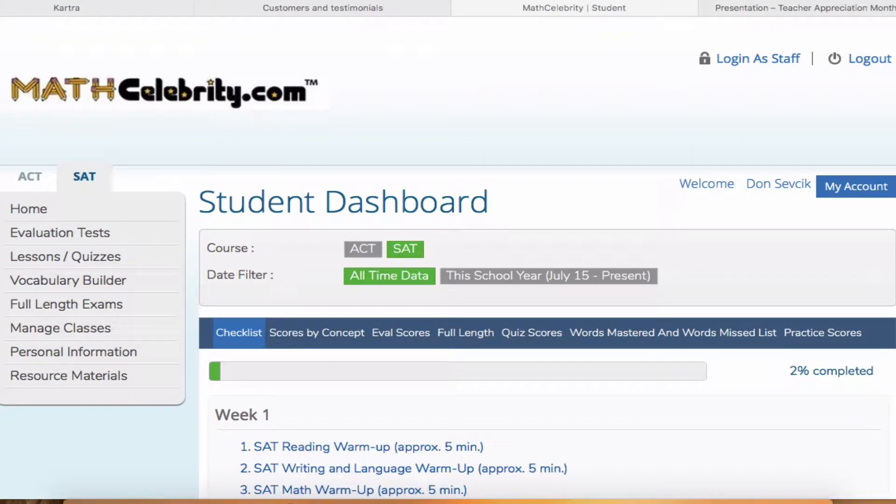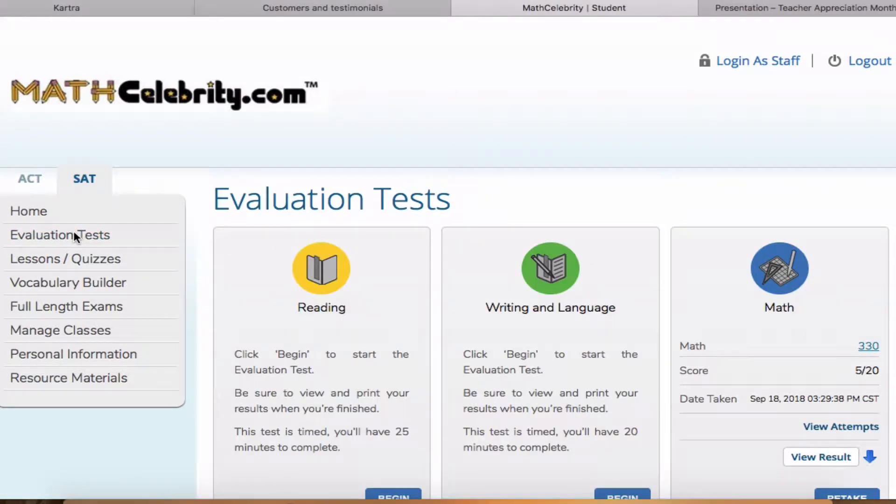All right, welcome to the Math Celebrity ACT and SAT Evaluation Tests video. When you purchase access to the platform, this is yet another feature you will get for four years if you buy the all-access or month-by-month if you pay monthly. So when you log in, this is the main screen, and then you click Evaluation Tests on the left-hand menu.